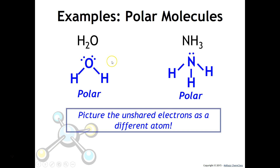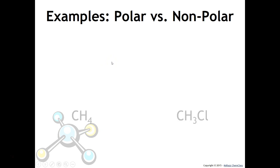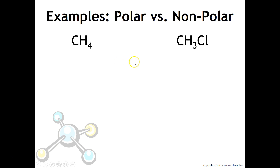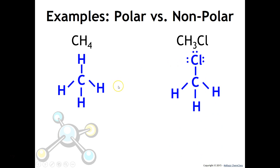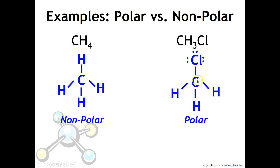Let's look at methane, CH4, versus methylene chloride, CH2Cl2. Look at the central carbon atom and decide which would be polar. The one on the right — methylene chloride — is polar, because it has chlorine and hydrogen both connected to carbon. They are not all the same, so it must be polar. Methane has all hydrogens around carbon, so it is nonpolar.